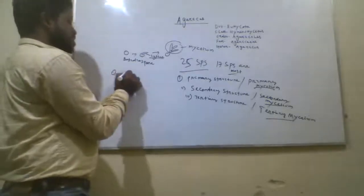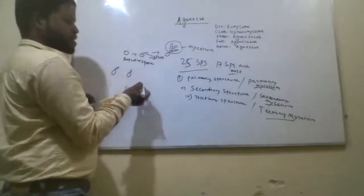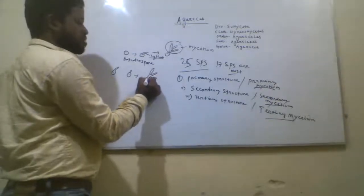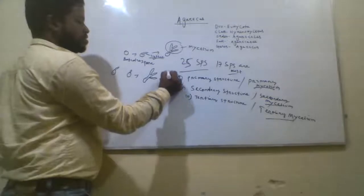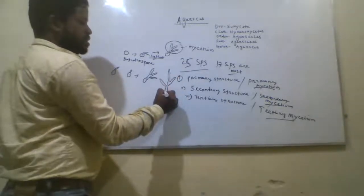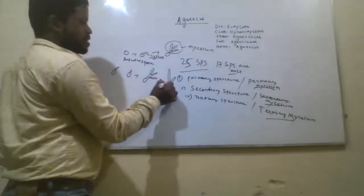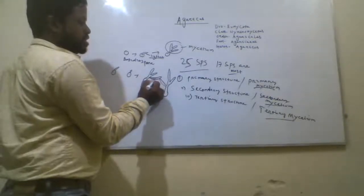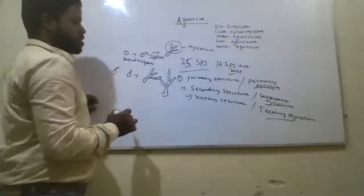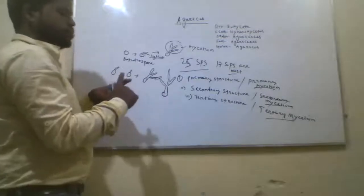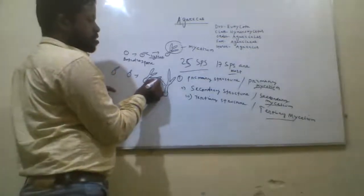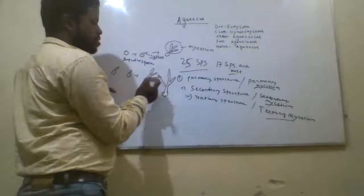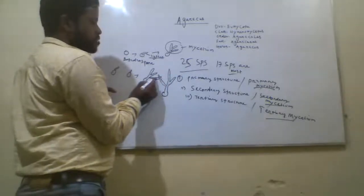Suppose there are two basidiospores and each one germinates at certain time intervals. Each one develops its differentiated structures — branched hyphae. These two hyphae come close to each other, and the common wall between them opens up, forming a common passage between the two mycelia.